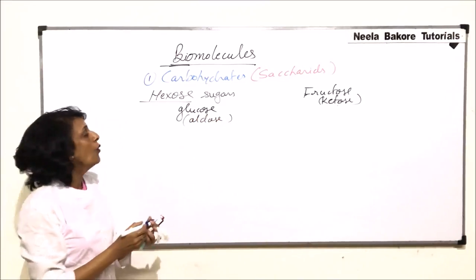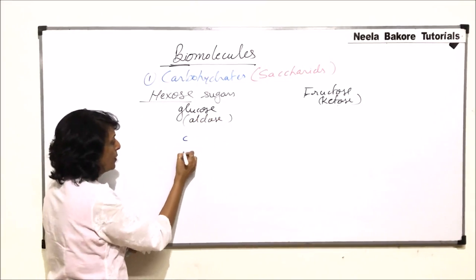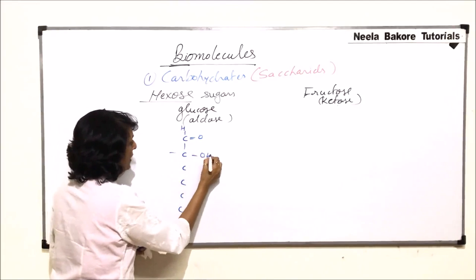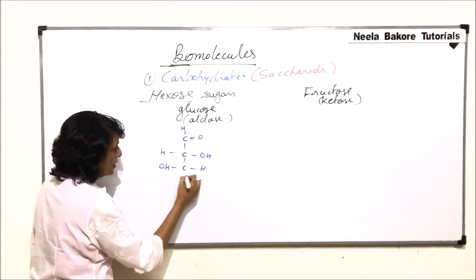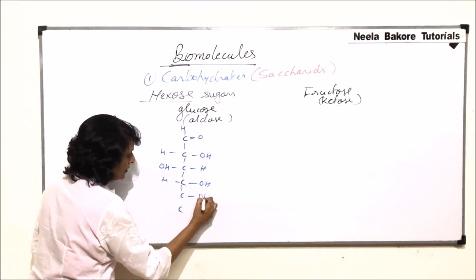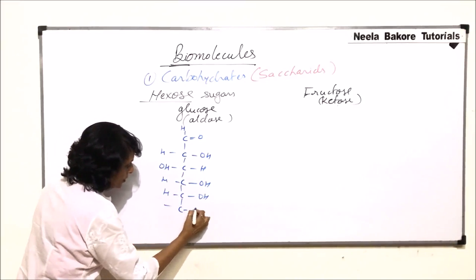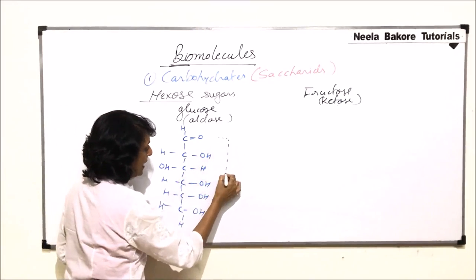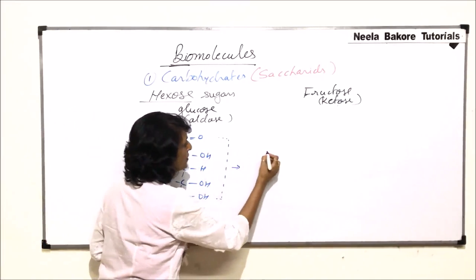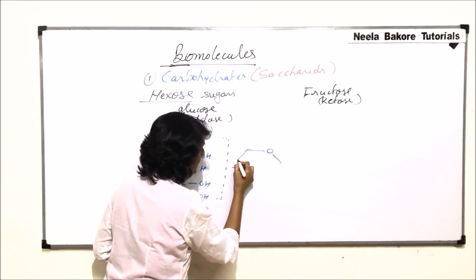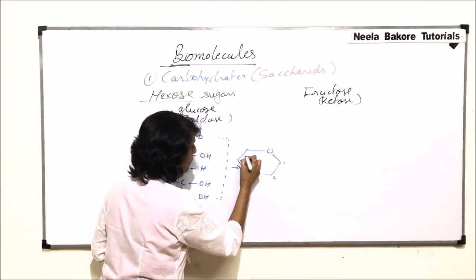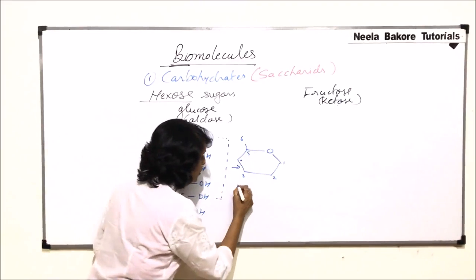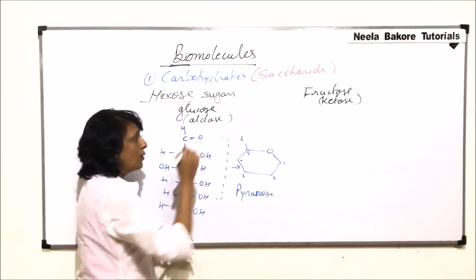When we make the structure of glucose, we made two structures. It is an open chain with carbons one through six, where carbon one has the aldehyde group. The OH orientations differ at specific carbons. When glucose forms a ring, the bond is formed between the first and the fifth carbon, giving a hexagonal ring with carbons one through five in the ring and carbon six extended. This ring is called the pyranose ring.